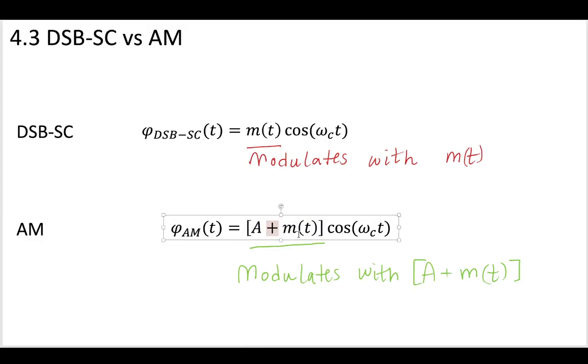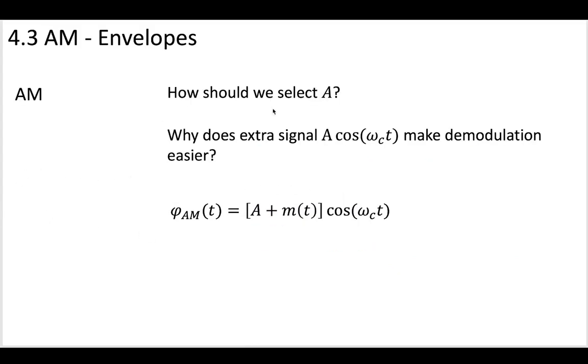So we're going to add some A to this message, and then we're going to do this classic amplitude modulation. But how should we select that value of A? What should we use as a criteria to know what the value of A should be? And also, what we should ask ourselves is why does adding this extra A make demodulation easier?